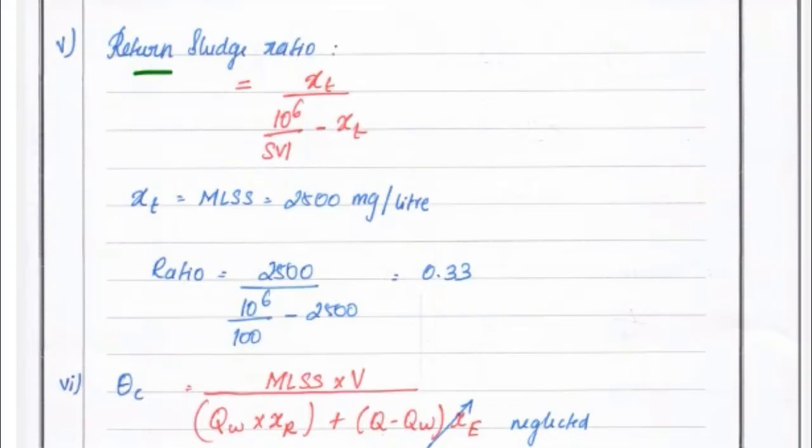Next, the retention sludge ratio equals XT divided by 10 to the power 6 divided by SVI minus XT. XT equals MLSS, so 2500 milligram per liter. Ratio equals 2500 milligram per liter divided by 10 to the power 6 divided by sludge value 100 minus 2500. We got the value of 0.33.